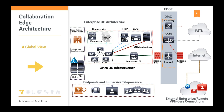At the edge, passing the internal firewall, we find the collaboration edge components, including Expressway E, which opens tunnels with the internal Expressway C. Expressway C is positioned within the internal network; Expressway E is positioned in the DMZ or at the edge of the enterprise network. The edge also includes CUBE and voice gateways. CUBE enables PSTN access through SIP trunking, a local PRI digital trunk connection, or IP-to-IP or SIP-to-H.323 interworking as an exit or receiving point from the outside world.